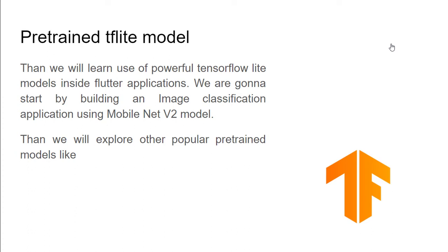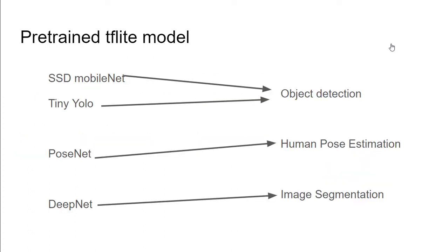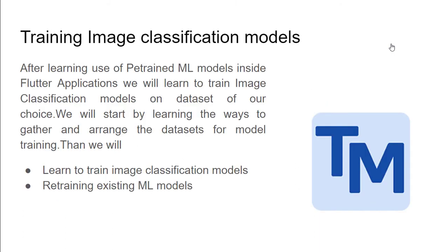In the second section of this course we will learn the use of powerful TensorFlow Lite models inside Flutter applications. We will start with image classification using the MobileNet V2 model, then explore other popular pre-trained models like SSD and YOLO for object detection, PoseNet for human pose estimation, and DeepNet for image segmentation.